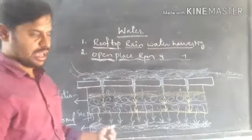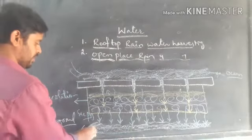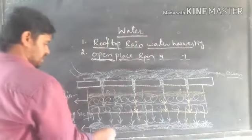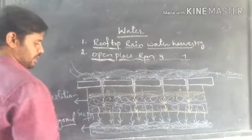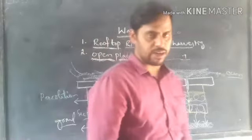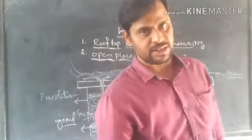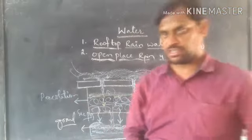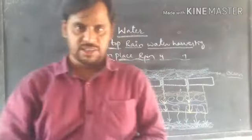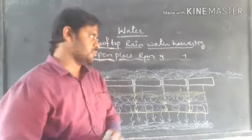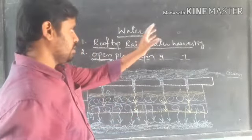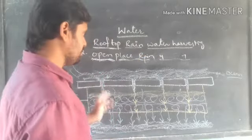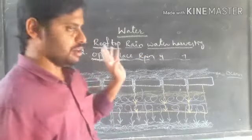We call it the aquifer. When the water level in the aquifer increases, the groundwater increases, and we can take it out by digging bore wells or tube wells. This is one of the water harvesting structures. With this we have completed the chapter on water.